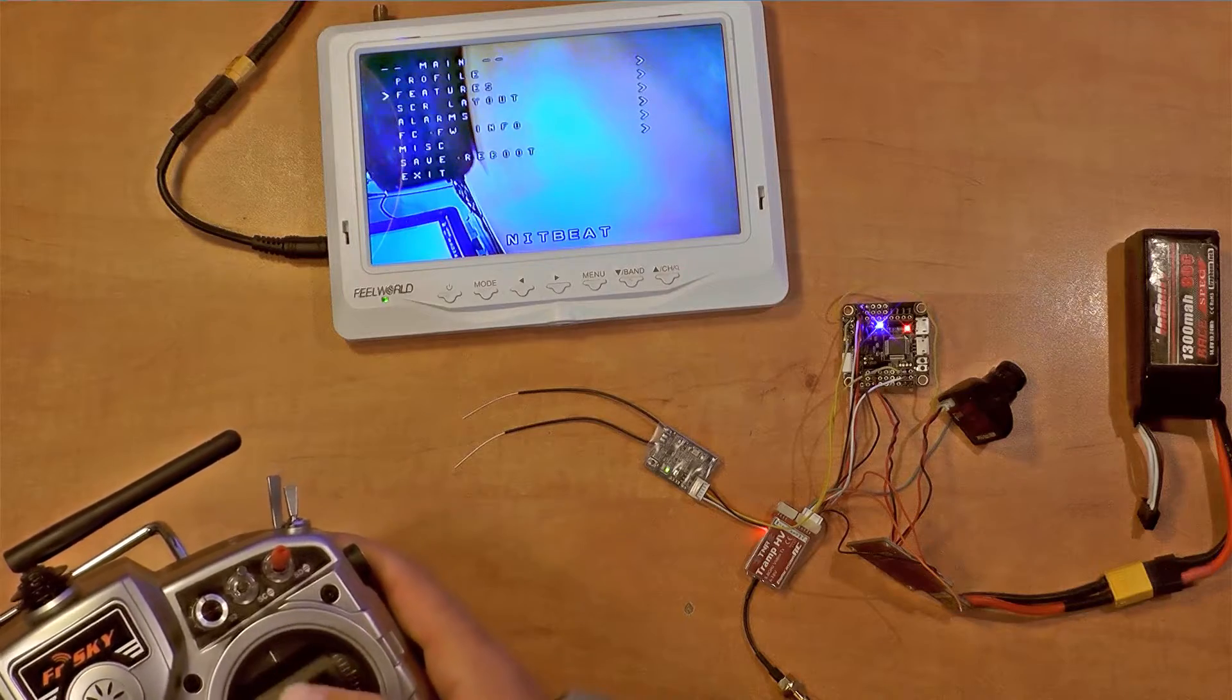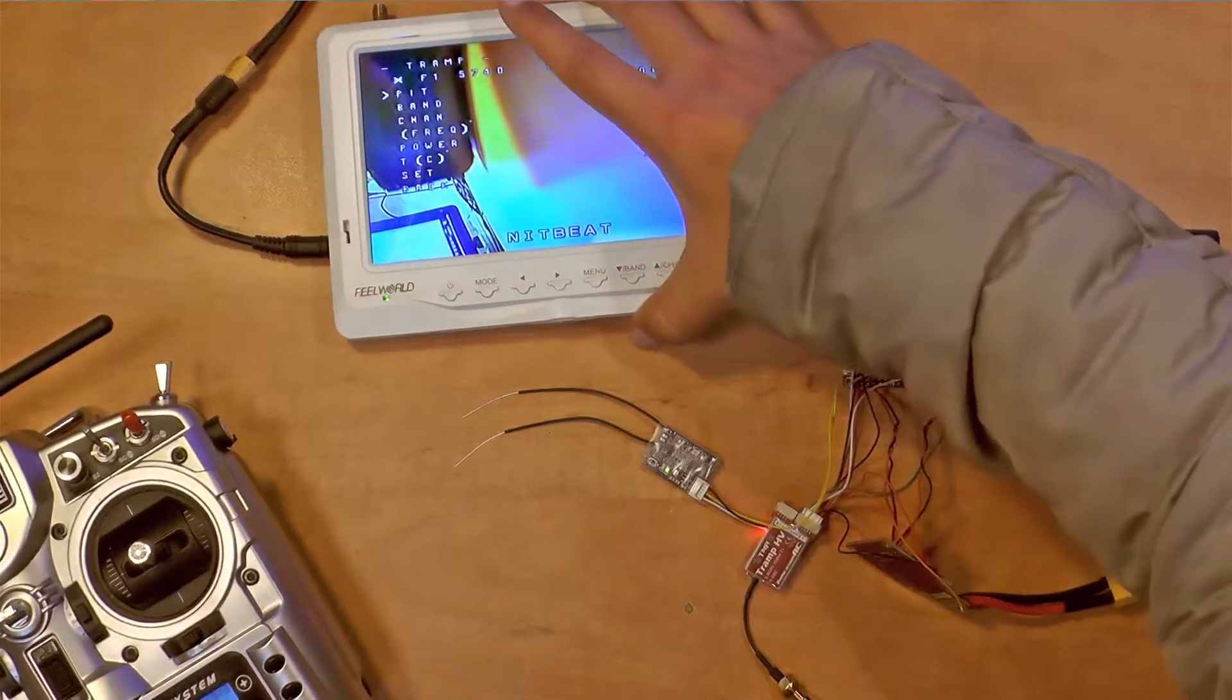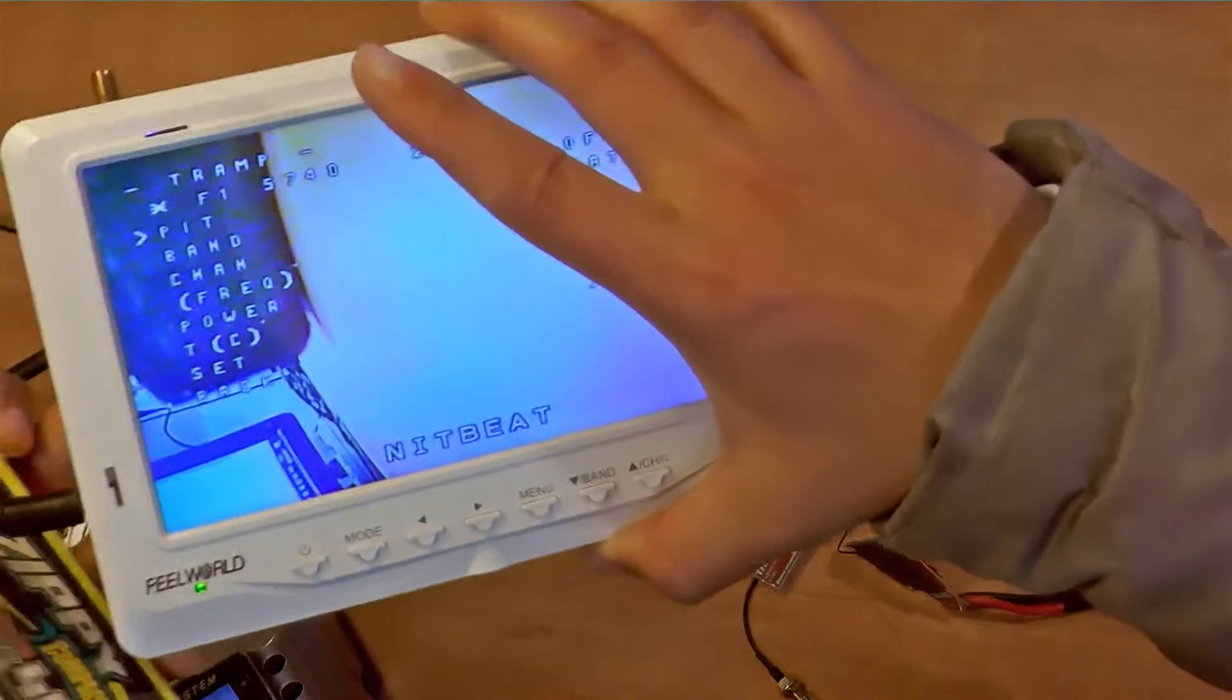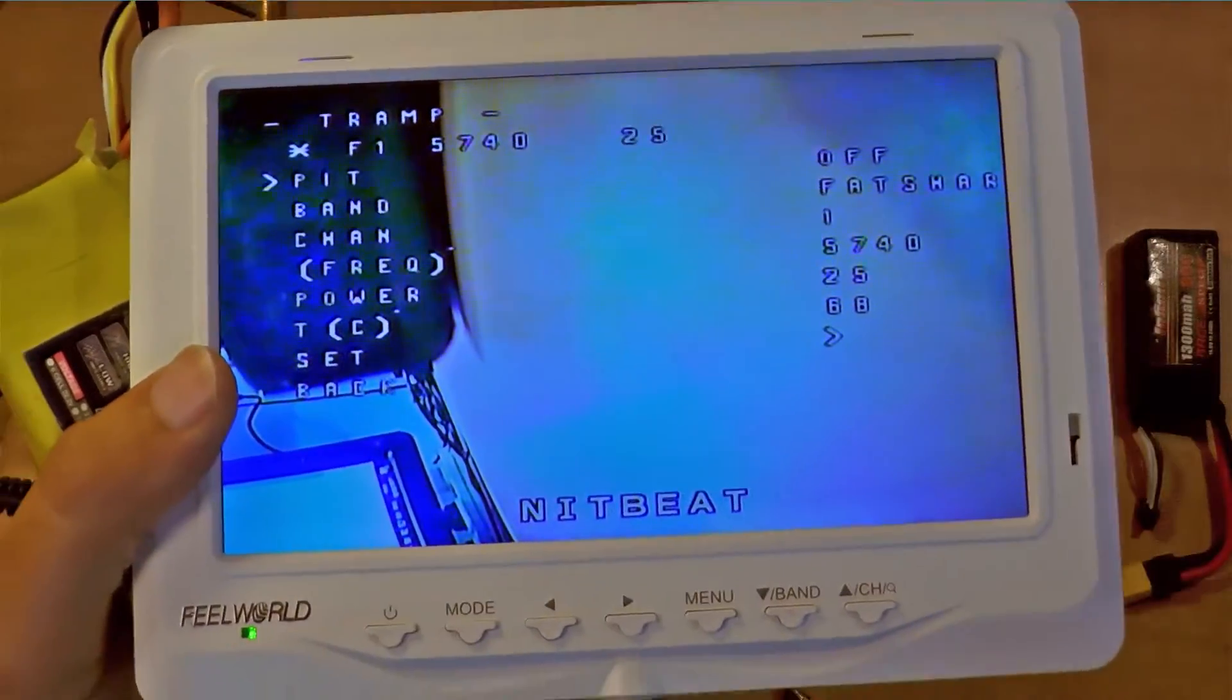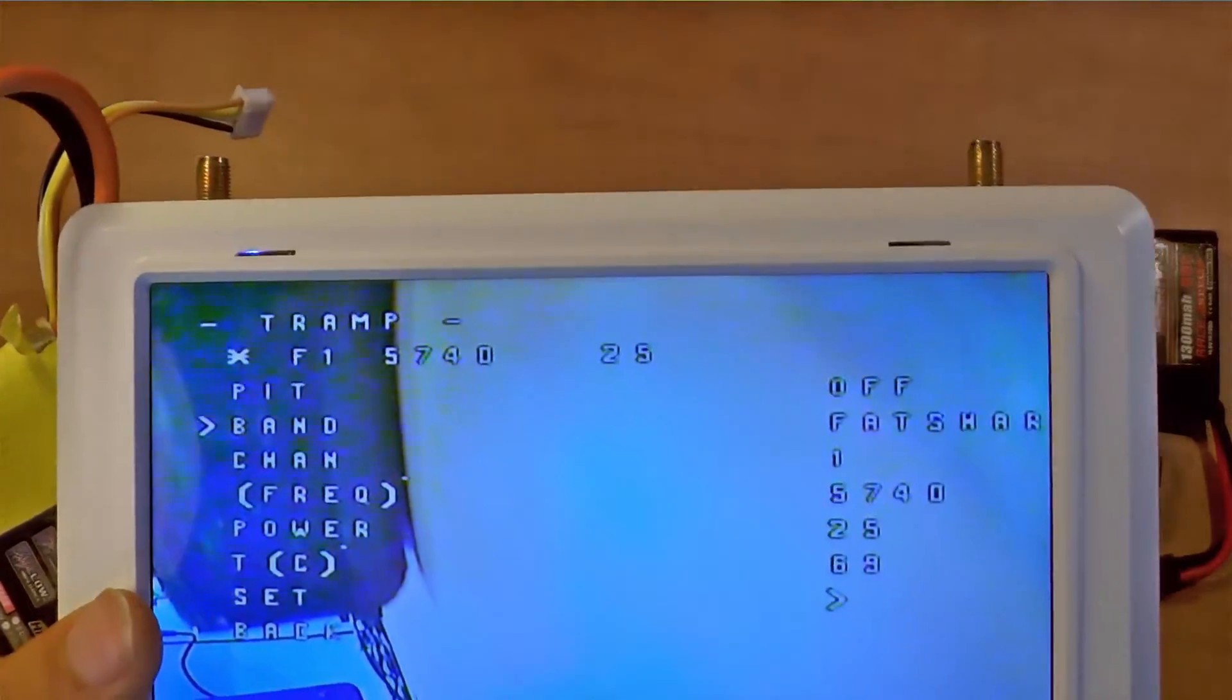Go to features. VTX Trump. Here you have the settings. So, I can also change the settings here as well.